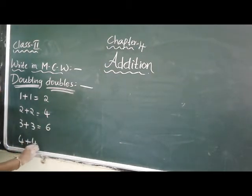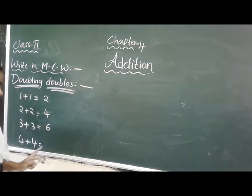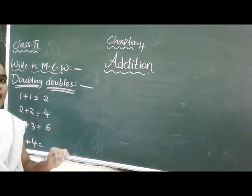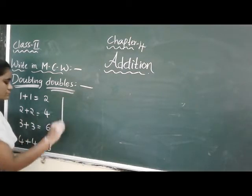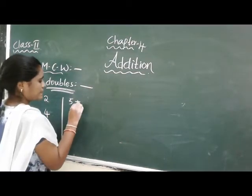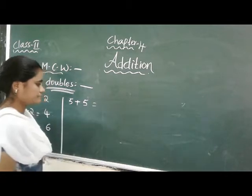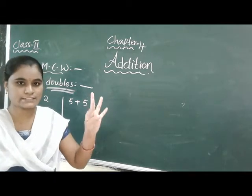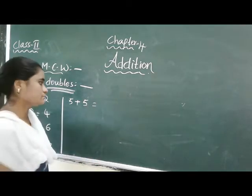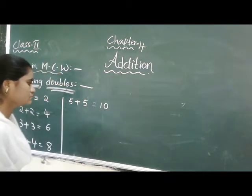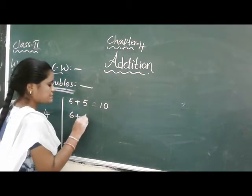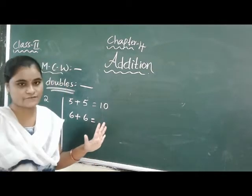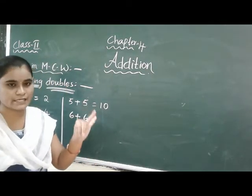4 plus 4: 4 in the mind, take 4 fingers, 4 after 5, 6, 7, 8 - so 4 plus 4 equals 8. 5 plus 5: 5 in the mind, take 5 fingers, 5 after 6, 7, 8, 9, 10 - so 5 plus 5 equals 10. 6 plus 6: 6 in the mind, take 6 fingers, 6 after 7, 8, 9, 10, 11, 12 - so 6 plus 6 equals 12.